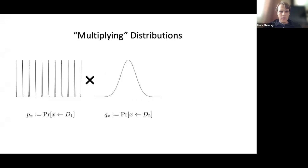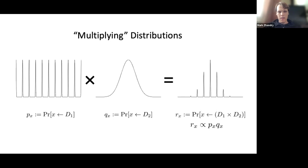Let's start with the classical world. Imagine that I have two distributions — maybe a comb here and a Gaussian here. What I want to do is somehow multiply them: take the two distributions as input and produce an output distribution where the pointwise probabilities are the product of the pointwise probabilities of the input distributions. The pointwise product won't be properly normalized, but we'd want probabilities proportional to the product.